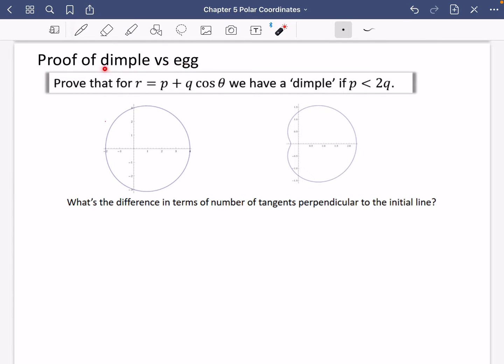OK, so we're going to finish chapter five with the proof of something I mentioned earlier about the dimple versus egg. I just told you that this particular polar equation will have a dimple like this one on the right side here. This is the dimple. If p is less than 2q, now we want to prove it.